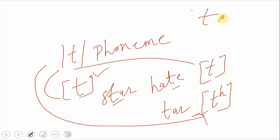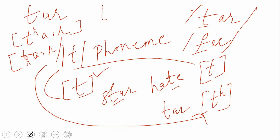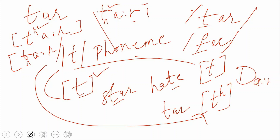For example, if I write 'tar' — that is one phoneme. If I change that phoneme to 'far,' the word's meaning changes because we changed the phoneme. But if we take the same 'tar' and write it with an aspirated version, or write it as a flap — the meaning does not change. Only the pronunciation changes. That is the difference between a phoneme and an allophone.